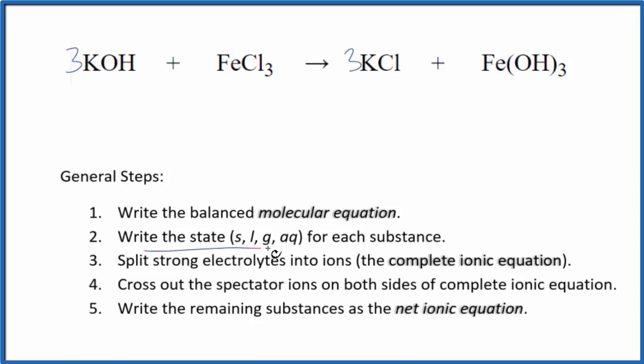Now we can write the state for each substance. For potassium hydroxide, strong base is going to dissociate completely into its ions. Iron chloride, chloride is very soluble. And then we have potassium chloride, another chloride. But potassium hydroxide, whenever you see a transition metal with a hydroxide, you're thinking it's probably either slightly soluble or insoluble.